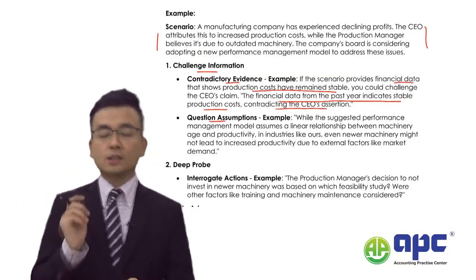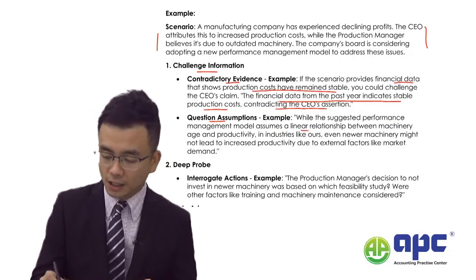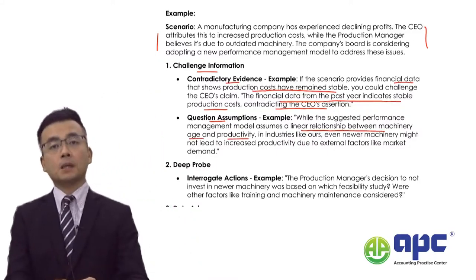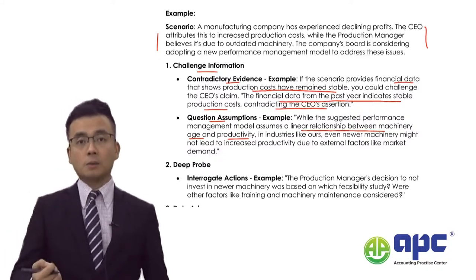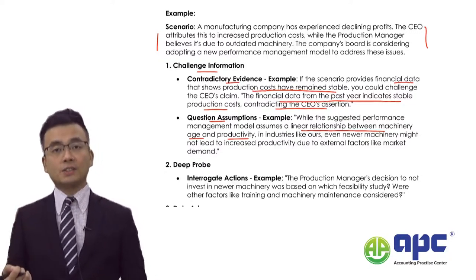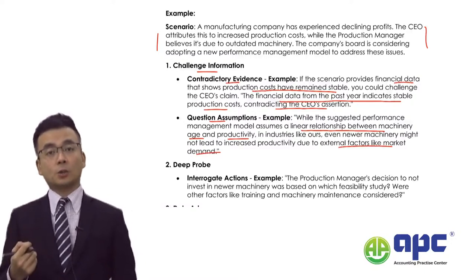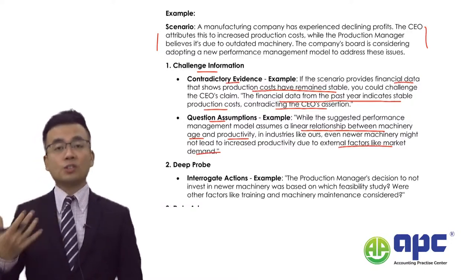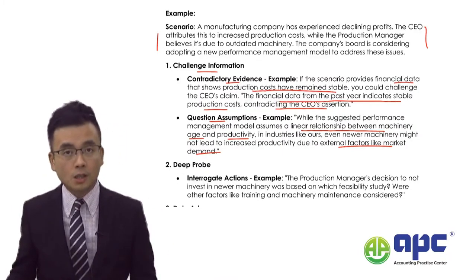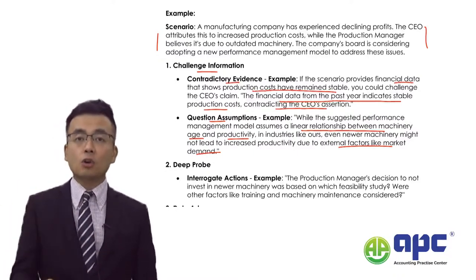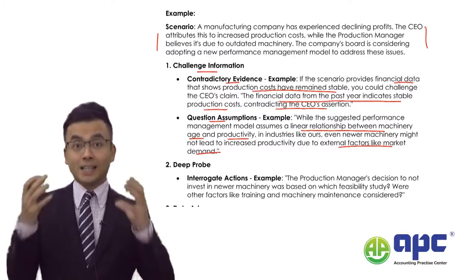You always need to question the assumptions made by management. For example, we may be assuming a linear relationship between machinery age and productivity — because the machine is old, it's not efficient. However, that doesn't make sense if external customer demand or tastes actually change. Always look for clues from the external market. Maybe customers no longer like our product. Don't just assume there will be a linear relationship between A and B in the APM paper.